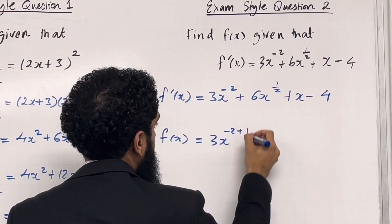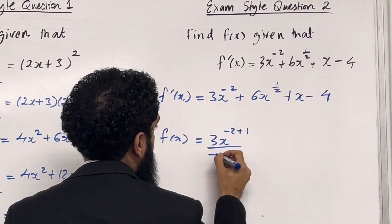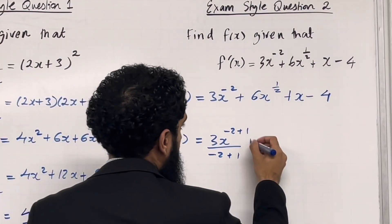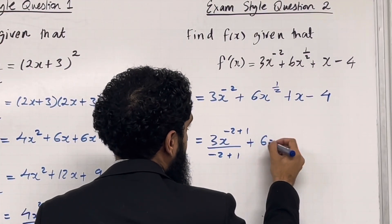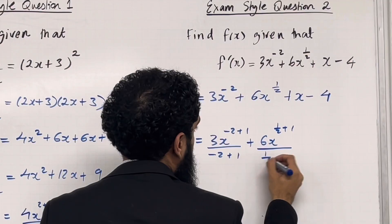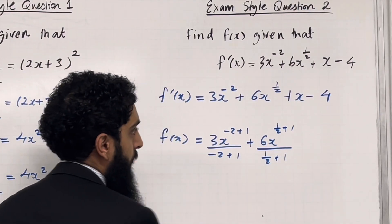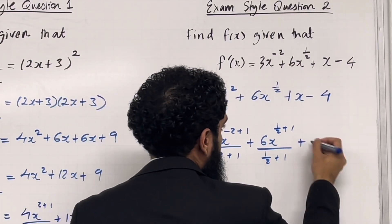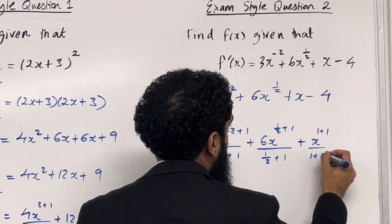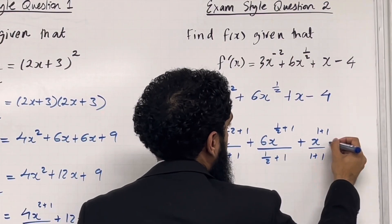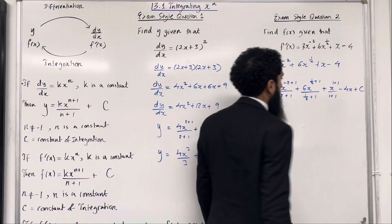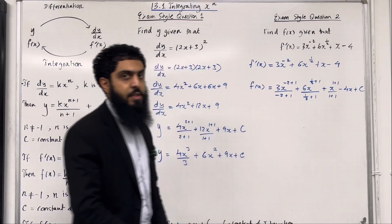For the first term, we add 1 to the power and divide by the new power. For the second term: plus 6x^(1/2 + 1) divided by (1/2 + 1). Then plus x^(1+1) divided by (1+1). Minus 4x. Plus c, the constant of integration.